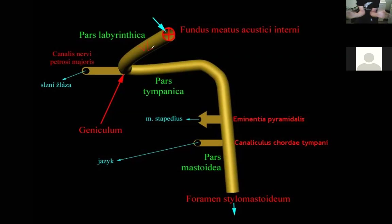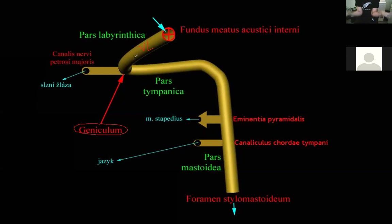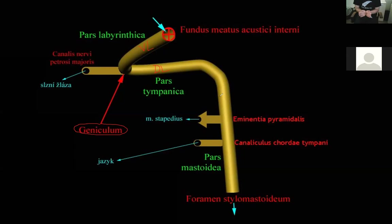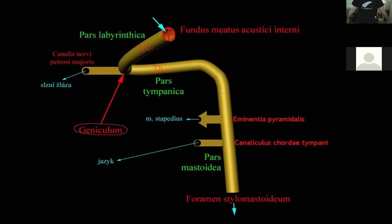Then the canal reaches the geniculum — a little knee — where the direction changes 90 degrees. First you go ventrolaterally, then you turn and go dorsolaterally. Then there is another bend, after which the canal goes caudally — straight down. So the canal has three directions: ventrolateral, dorsolateral, and caudal.